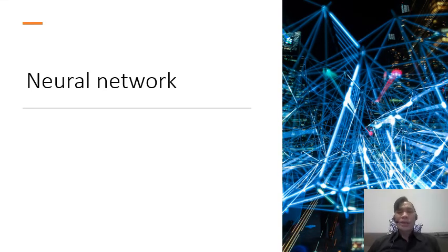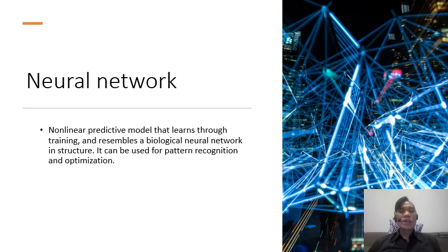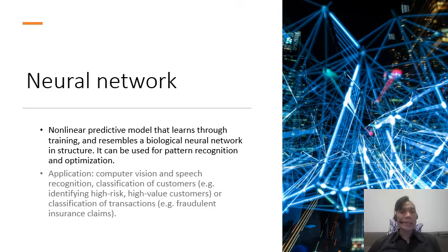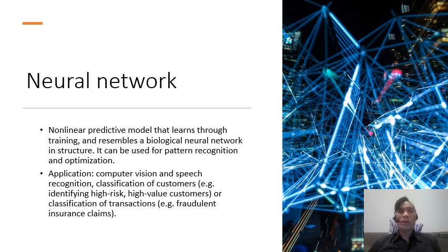Another important component of machine learning and AI is the neural network. This is a non-linear predictive model that learns through training and resembles a biological neural network of a brain. It can be used for pattern recognition and most importantly for optimization of these patterns. Applications include computer vision and speech recognition — the more information fed into the neural network, the more it tweaks the network until the model becomes more accurate. It can be used for the classification of customers, such as identifying high-risk or high-value customers, or the classification of transactions, such as identifying fraudulent insurance claims.